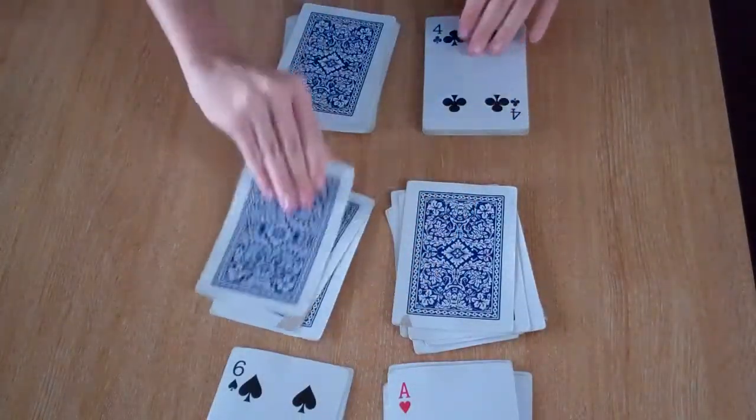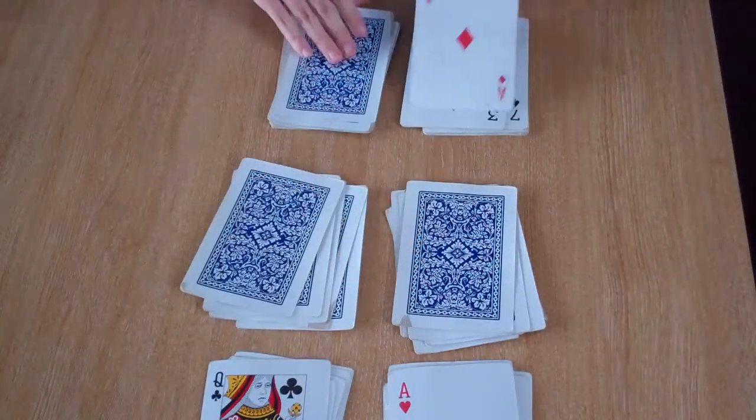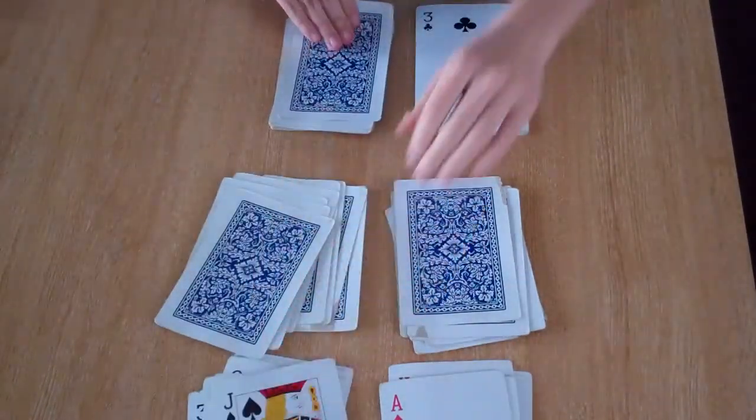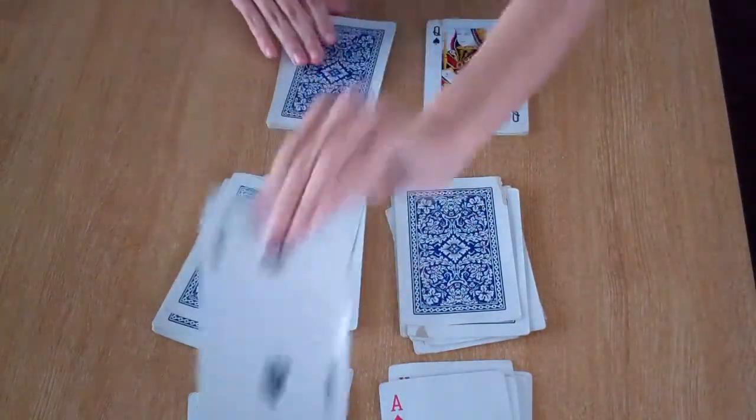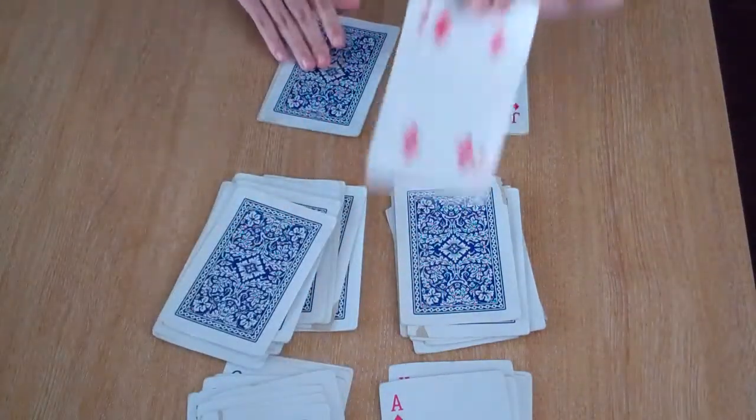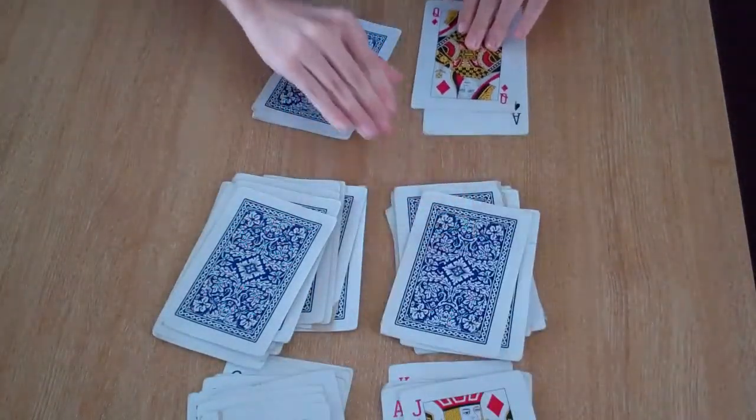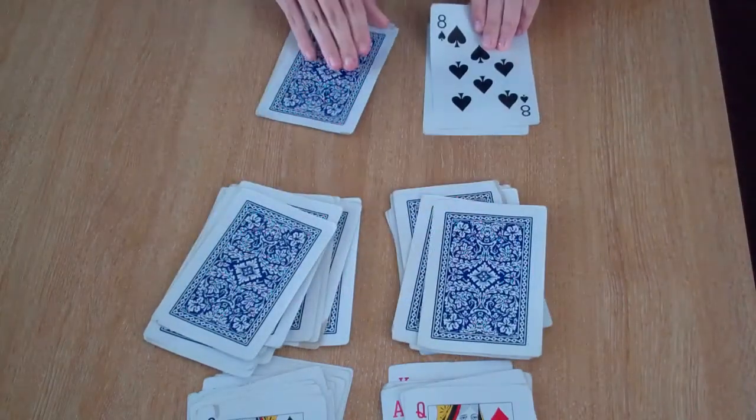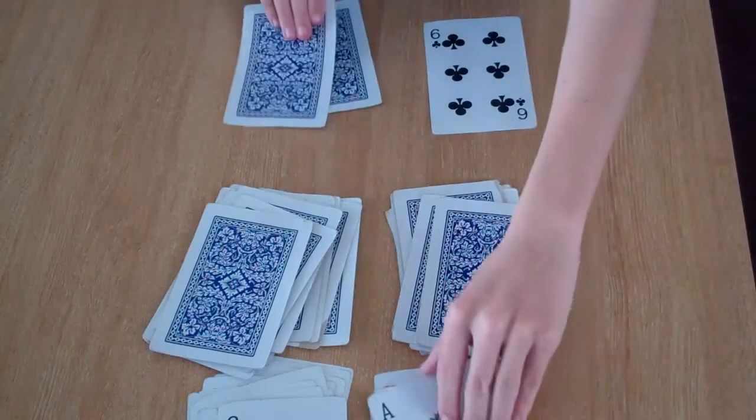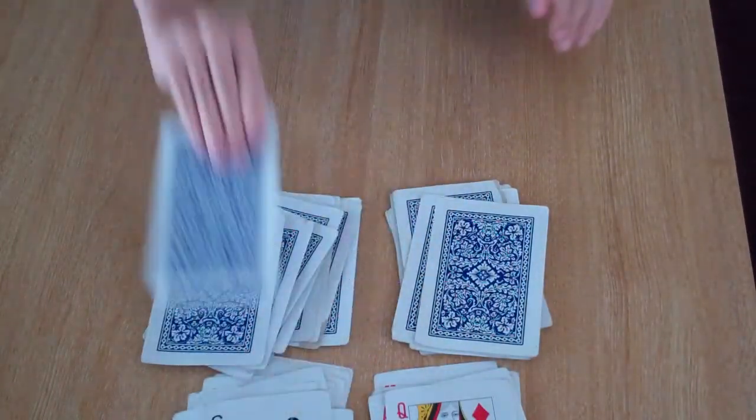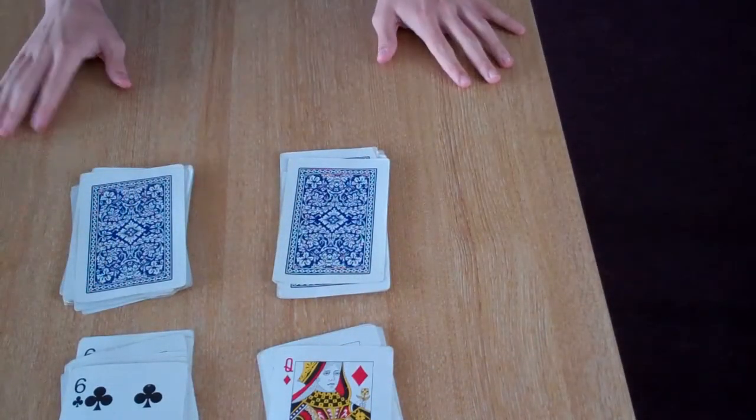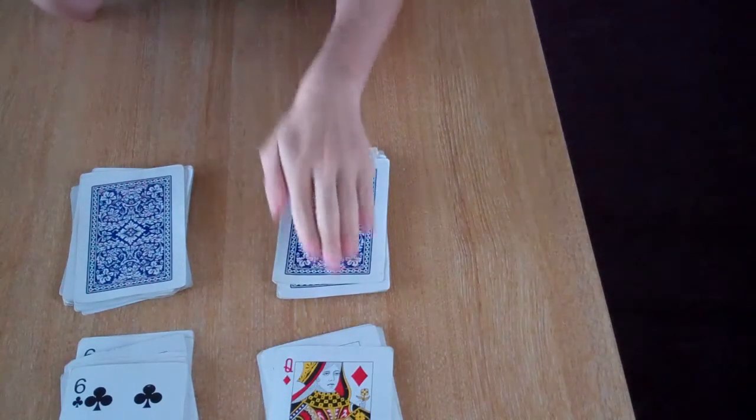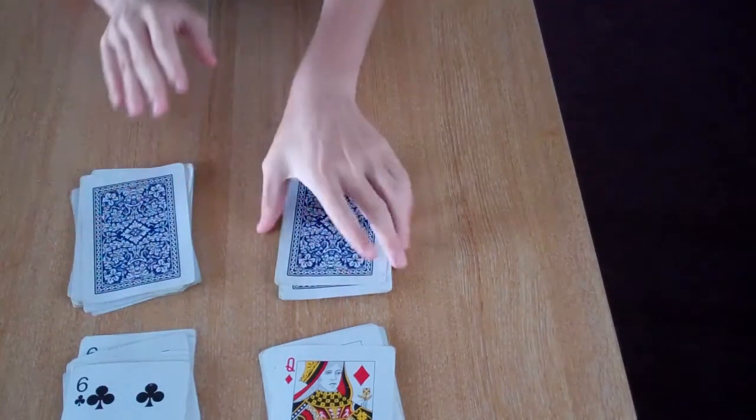It might take a while but you'll get there eventually. All right, there you go. Now that you have your two piles, by thinking about which one is red and black, I've influenced the cards. There's going to be the same amount of reds in this pile as there is blacks in that one.